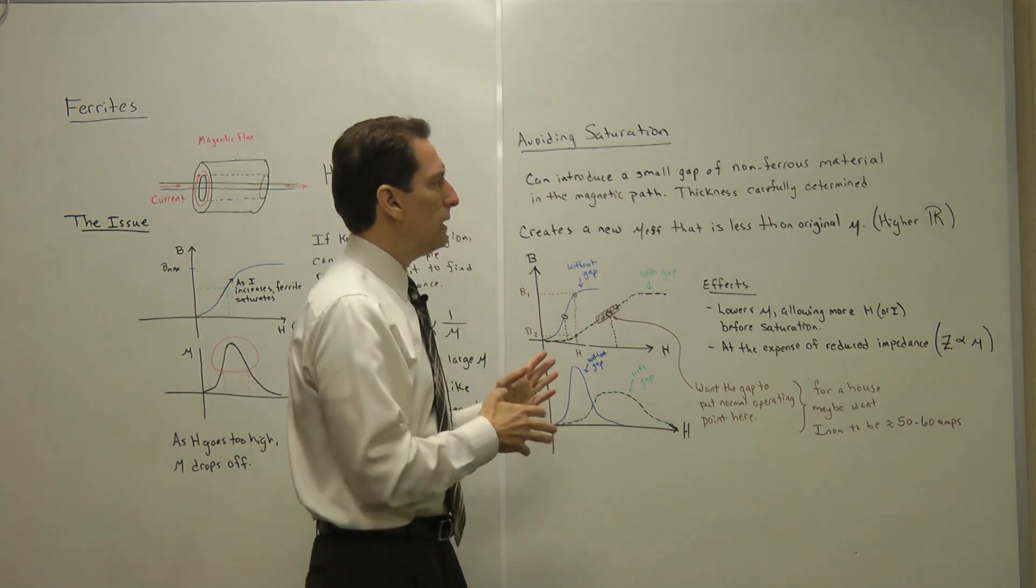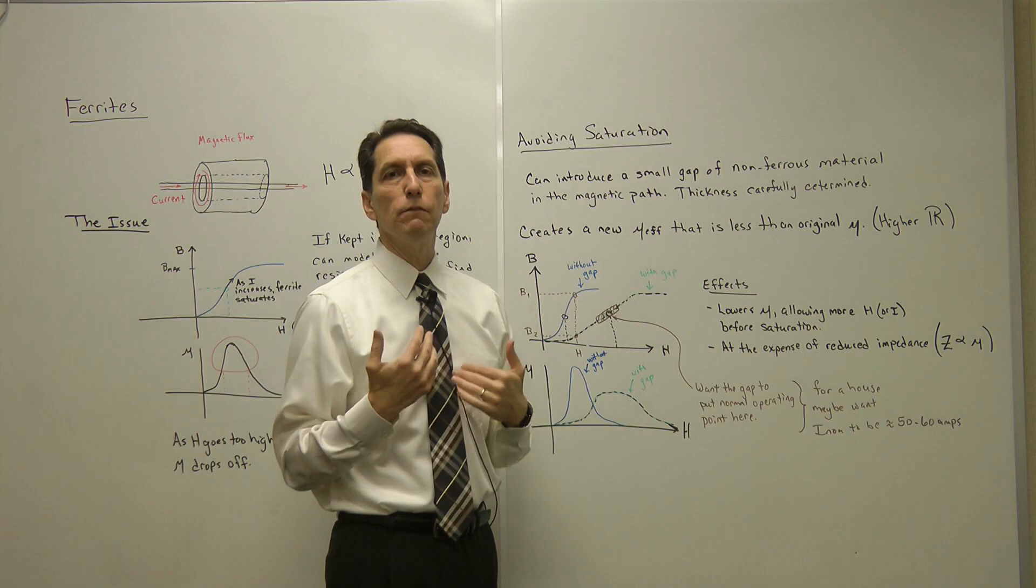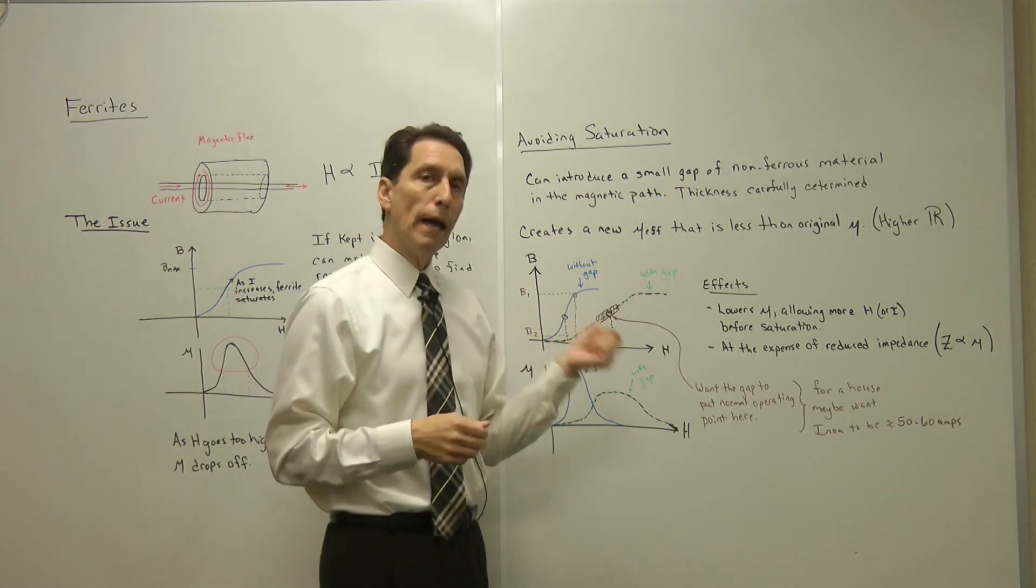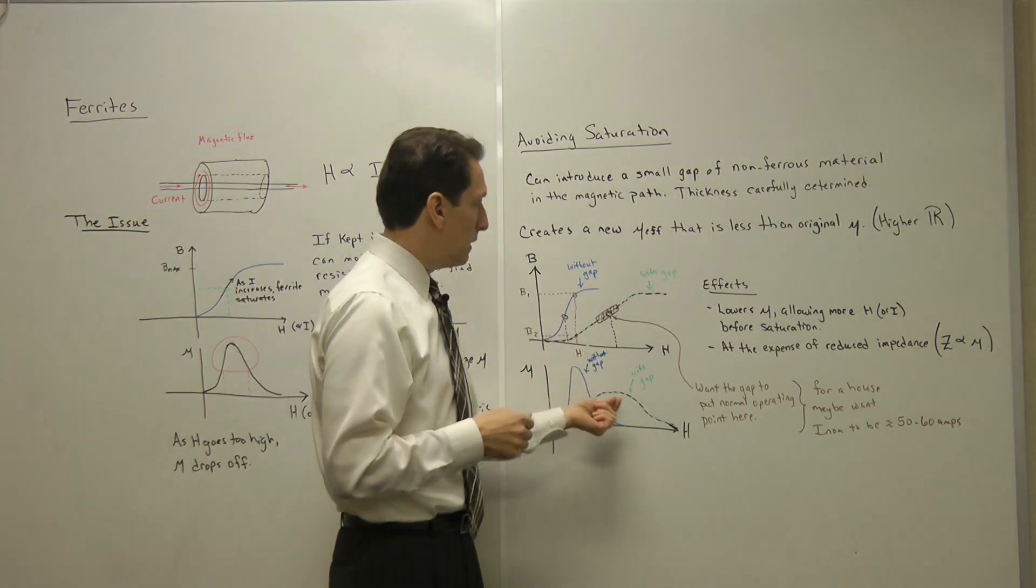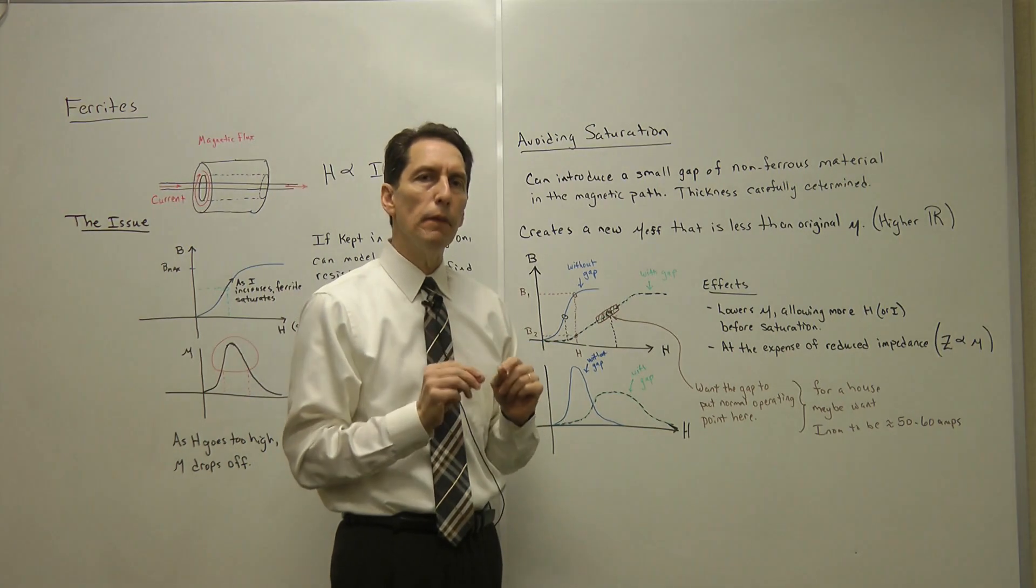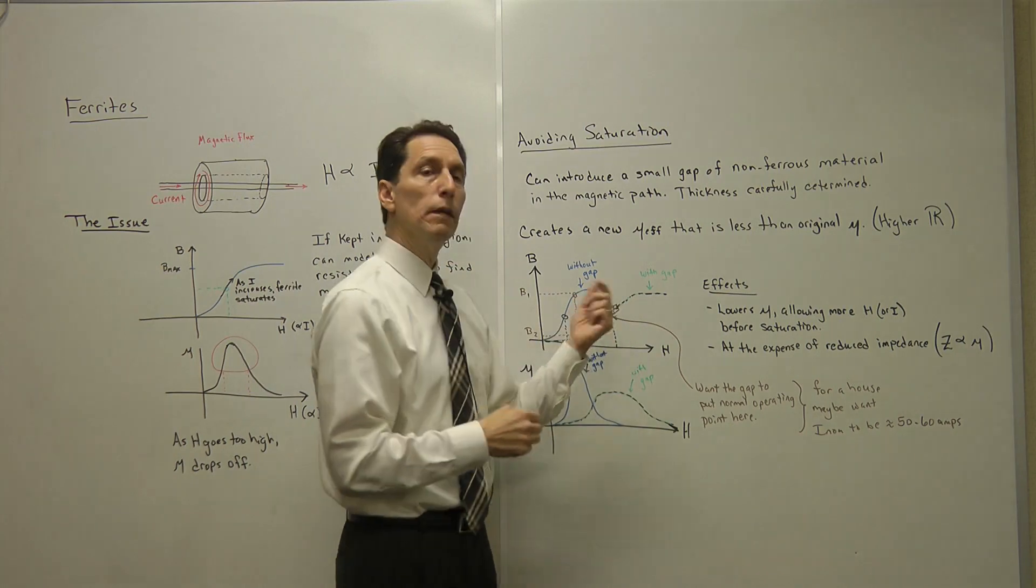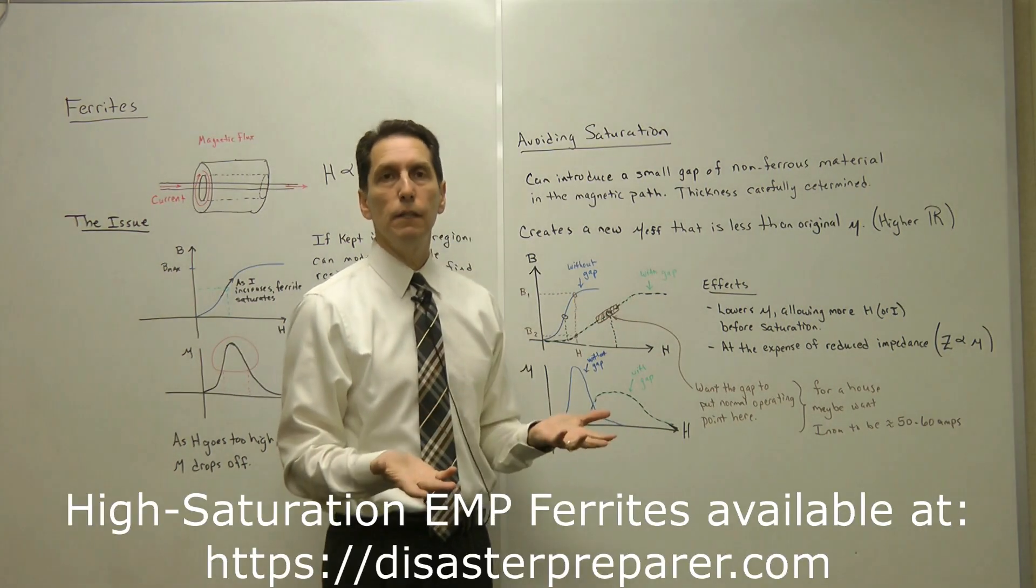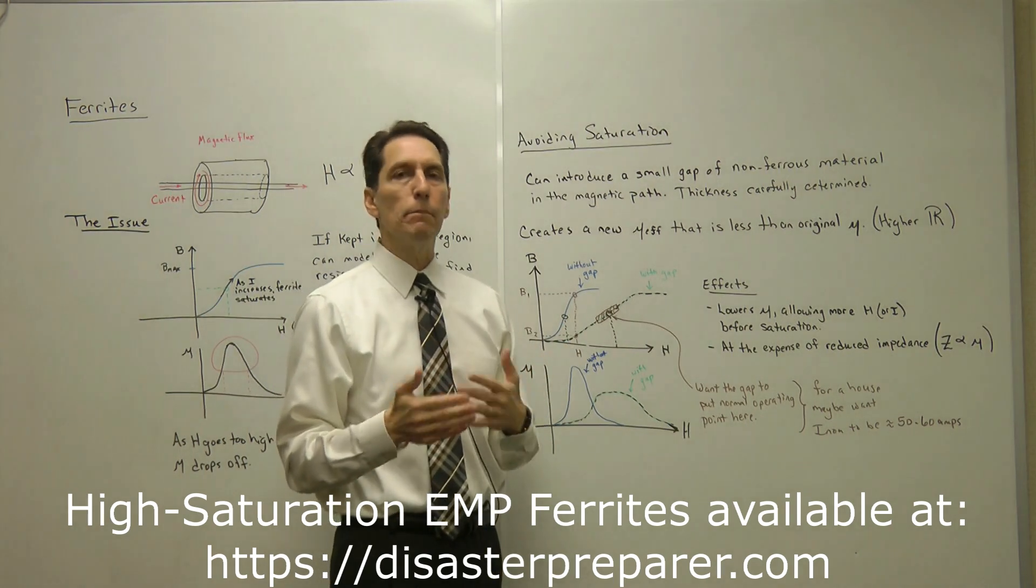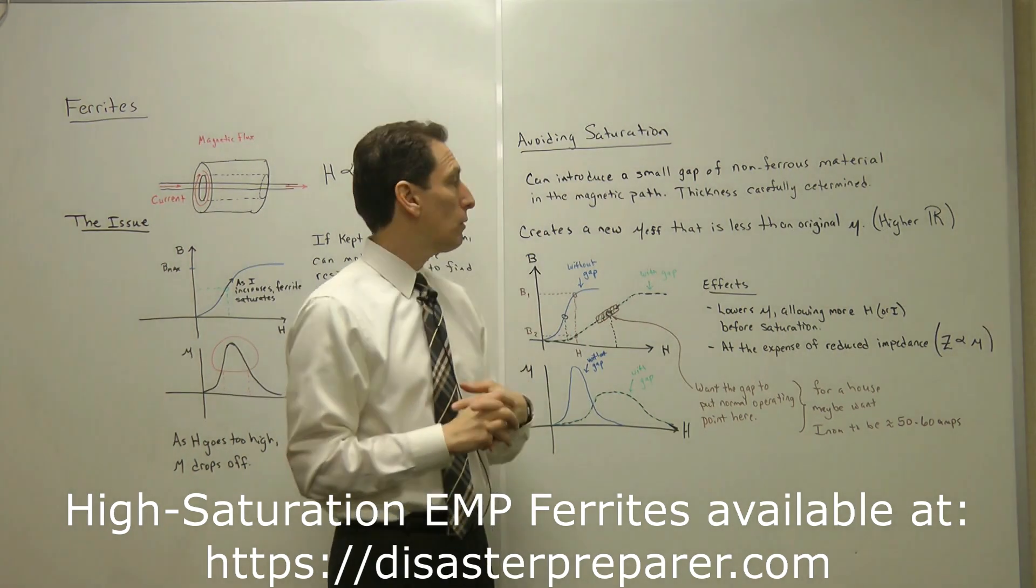This shows the idea of what I did to the high current saturation ferrites. The idea is to introduce a very small gap, and if you design it just right, you do the calculations correctly, and you figure out a way to implement that gap, you can end up getting this kind of permeability curve which lets you operate at much higher currents. That's the idea of the ferrites that I'm selling—they're introduced with a non-ferrous gap that's carefully controlled and precisely calculated to get you in the right operating region.